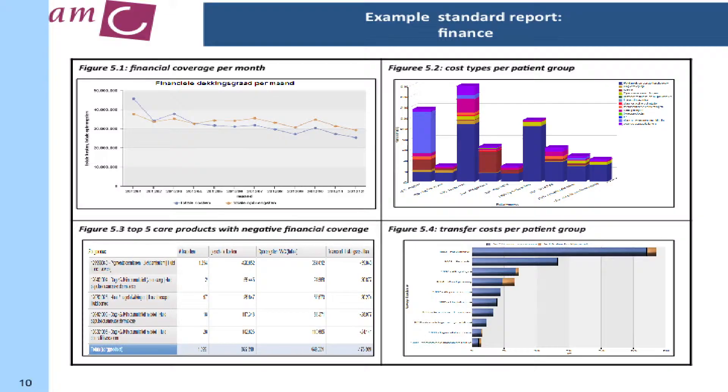The fourth aim of this system was to use this information for internal and external legitimation — for example towards insurance companies and ministries.